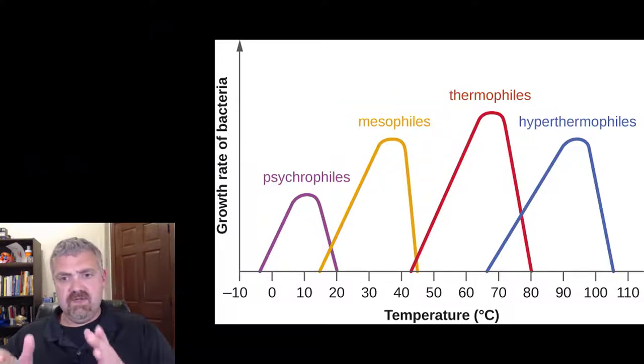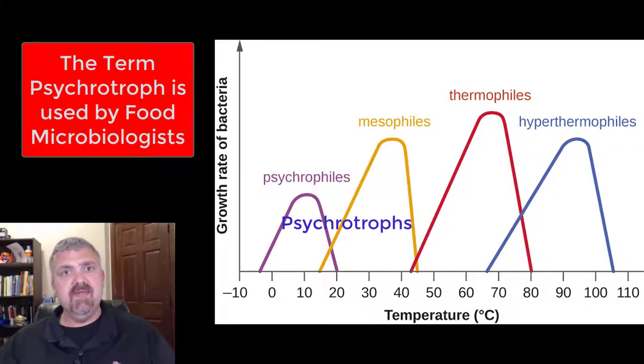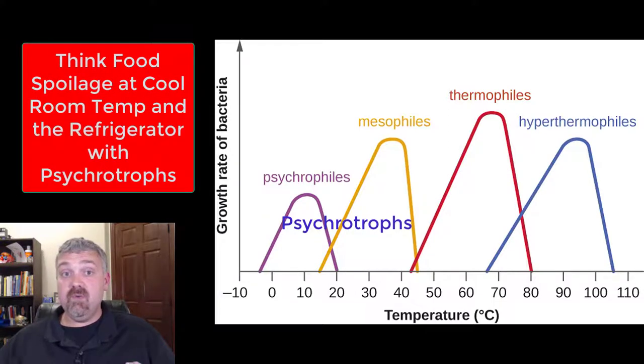Now we've got to add this extra category. So again, I'll show you in the video where it is. But between psychrophiles and mesophiles, this is a term that food microbiologists use called psychrotrophs. And I wish it was on this chart, but it isn't. So psychrotrophs, these are much more important than psychrophiles because these are going to lead to a lot more spoilage in the refrigerator. So they're going to lead to low temperature food spoilage. They can grow in the refrigerator. So if you're looking at foodborne illness at lower temperatures like the refrigerator, and even in a cool room, it would be the psychrotrophs that we're primarily concerned about.